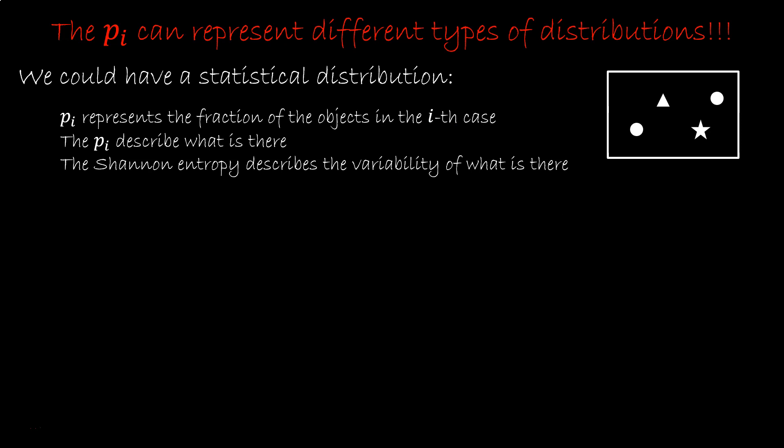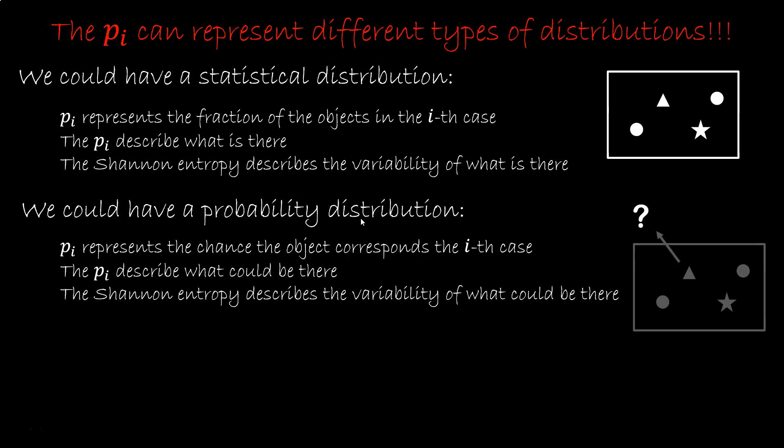We could have a probability distribution. We have one object taken from a population. The PI represents the chance that the object corresponds to the ith case. For example, there is a 66% chance that the atom in the magnetic trap is hydrogen.